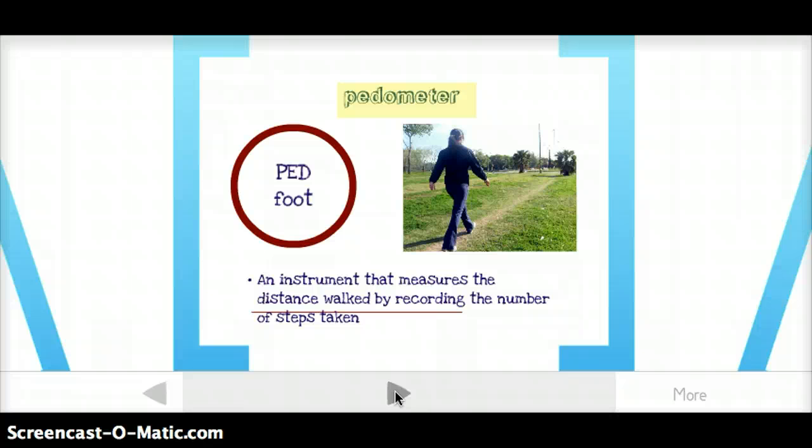A pedometer is an instrument that measures the distance walked by recording the number of steps taken. You sometimes see people wear these on their belts when they walk, and every time it moves, it counts a step. It's made up of two roots, ped for foot, and then, of course, meter for measure. So, it measures how far your feet go.